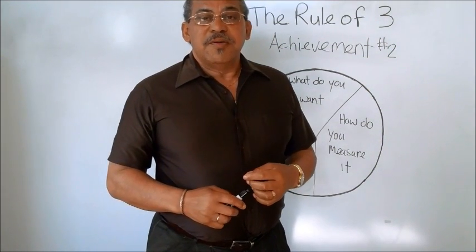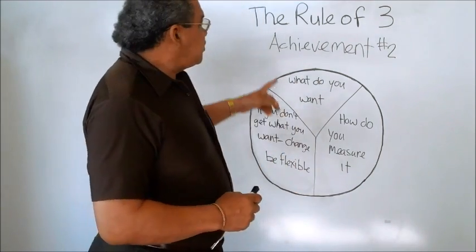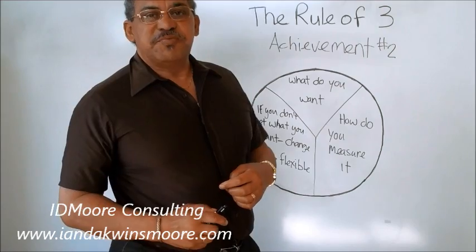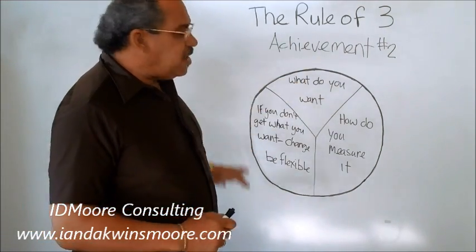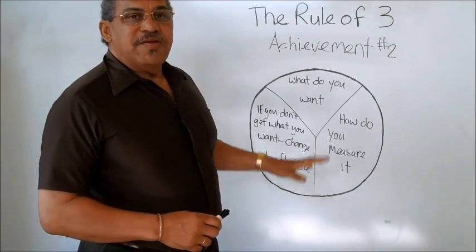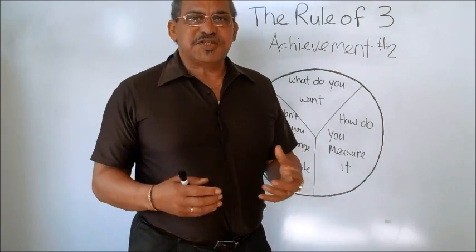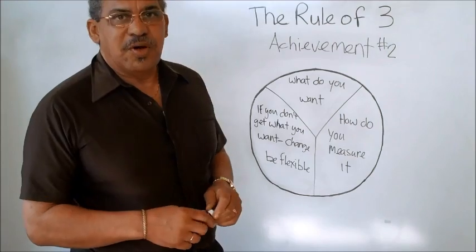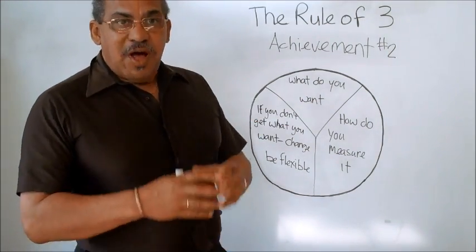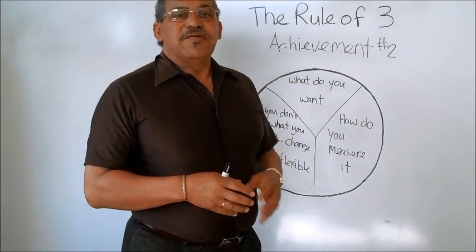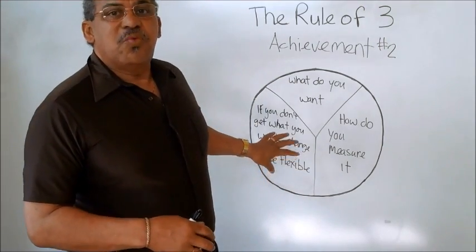Hi, I'm Ian Moore, and I'm going to continue with the discussion about the rule of three by introducing the second part, achievement, the rule of three for achievement. As you see, we've divided this pie chart into three sections. Now, this is appropriate for when we are going after something, when we want success in our life, when we want to achieve some goal.